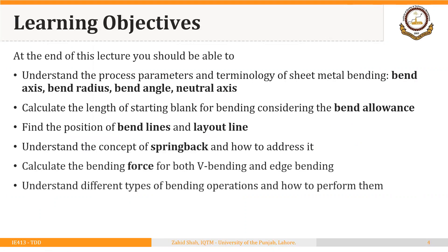At the end of this lecture you should be able to understand the process parameters and terminology of sheet metal bending, including bend axis, bend radius, bend angle, and neutral axis. Then you should be able to calculate the length of the starting blank for bending considering the bend allowance. After finding the starting length of the blank, you should be able to find the position of the bend lines and the layout line.